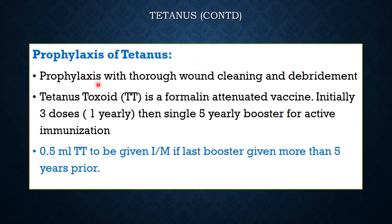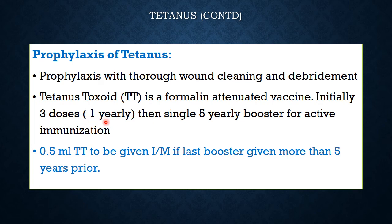Prophylaxis of tetanus is done with thorough wound cleaning and debridement, followed by tetanus toxoid (TT) vaccination — a formalin-attenuated vaccine. For simple prophylaxis in the average young adult, three doses are given on a yearly basis: one dose of 0.5 ml tetanus toxoid intramuscularly for the first three years, and then a five-yearly booster is required. Active immunization generally takes four to six weeks to develop.